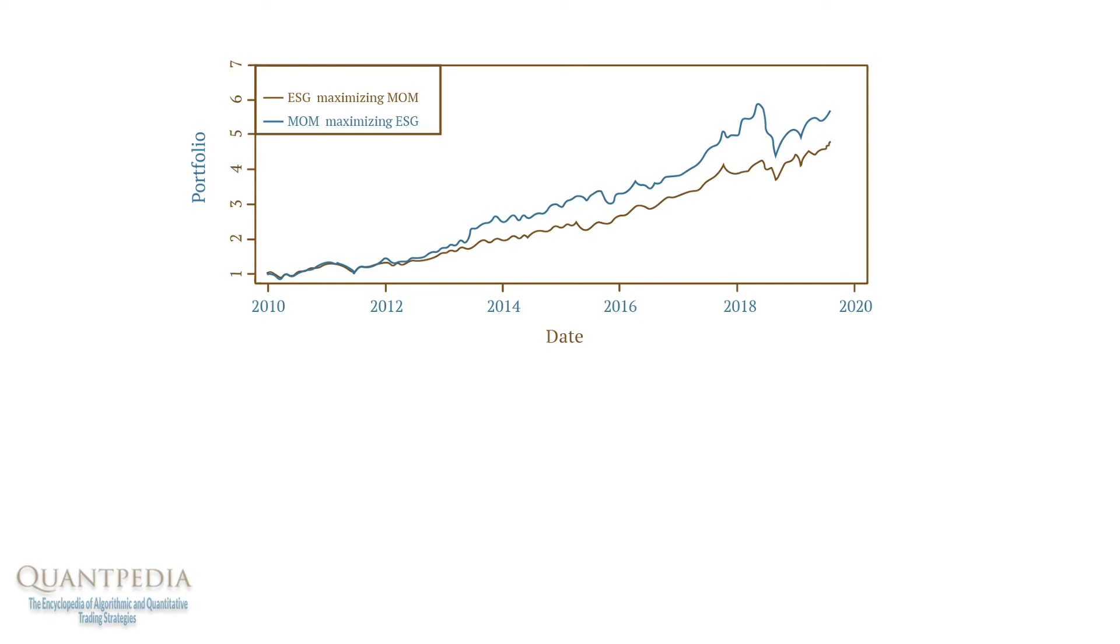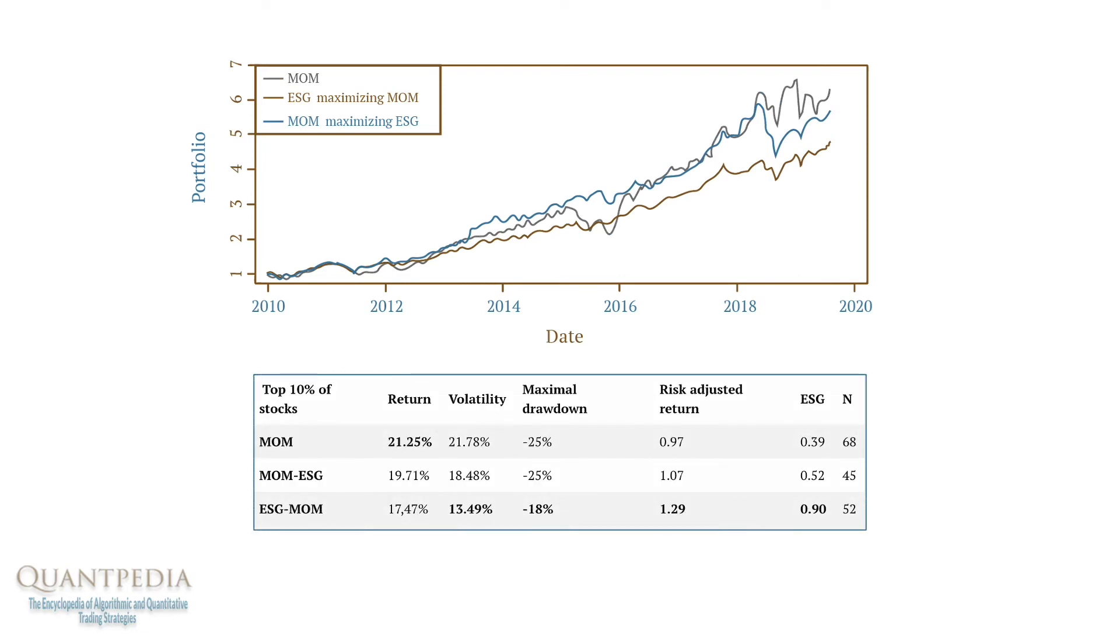Secondly, the situation can be reversed, and we can build a portfolio with as high ESG as possible while maximizing the momentum of the stocks. Both combinations can be an interesting modification of pure momentum strategy. They are both more modern, attractive, socially responsible and less volatile.